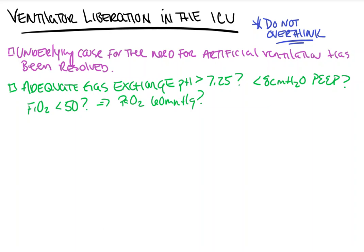So far we've covered: did we reverse the underlying need for ventilation, and is the patient adequately exchanging gas on minimal vent settings? Next, we need to know: are they hemodynamically stable? Some people may require small amounts of pressors or inotropic support and can still be extubated — that's okay. What I'm talking about is patients maxed out on levophed or getting a second pressor who could decompensate at any minute. Patients who are hemodynamically unstable should not be extubated, even if they pass a weaning trial.